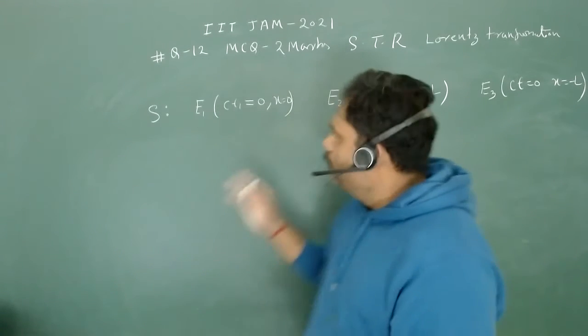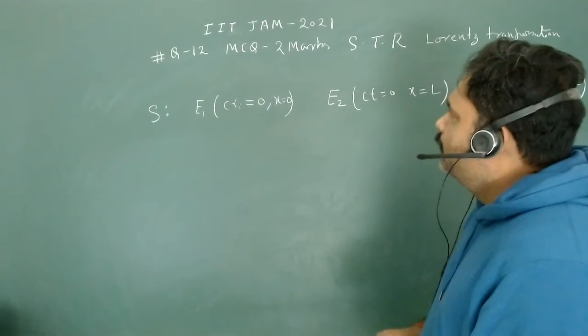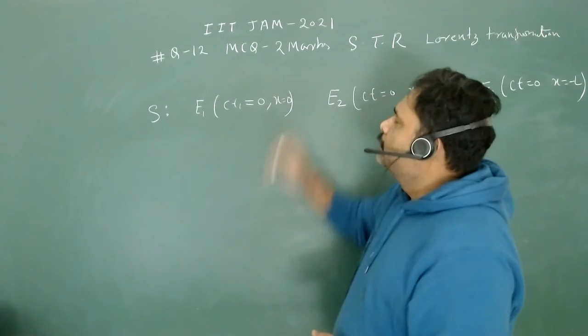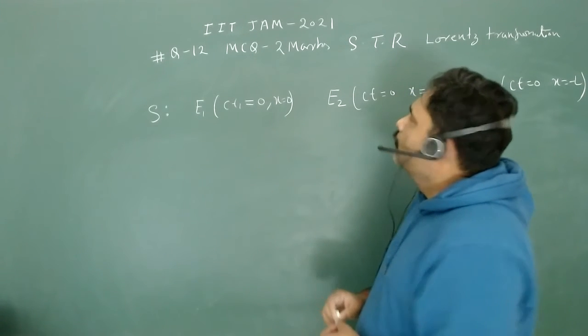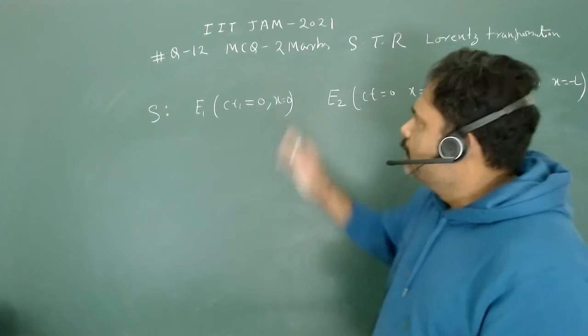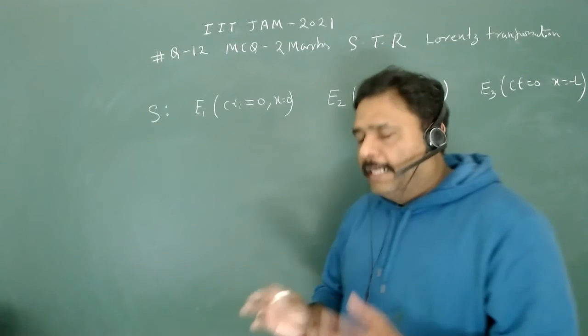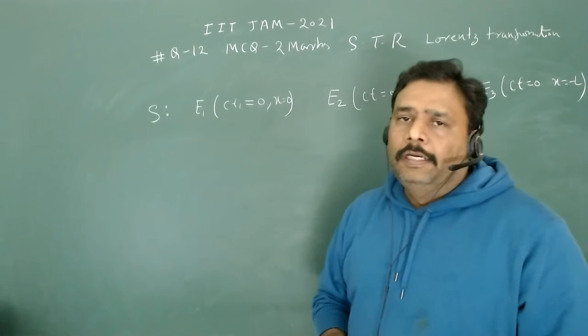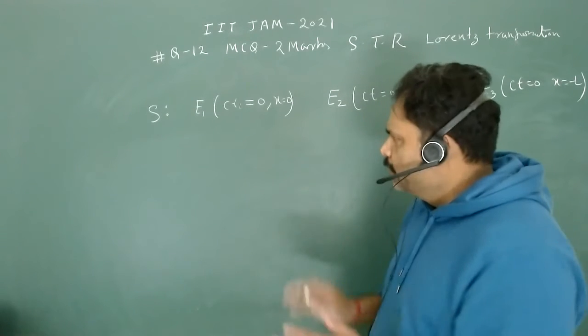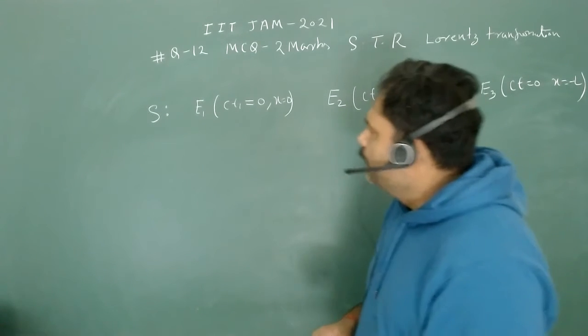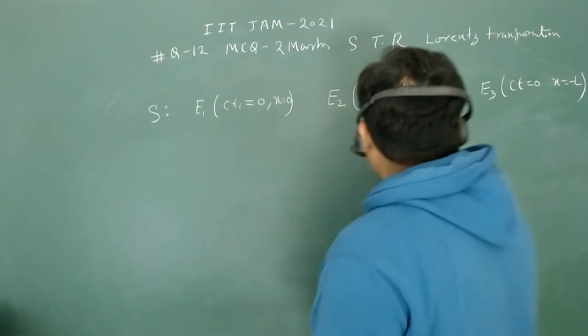Hello friends, let's go to this problem. This problem is from IIT JAM 2021, and this is an MCQ 2 marks problem from the special theory of relativity. We have to apply mainly Lorentz transformation in this problem.